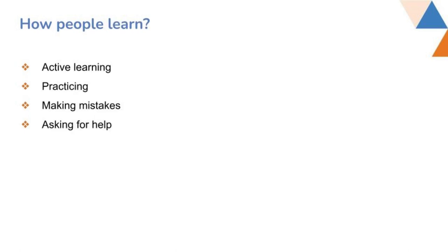The next thing is how people learn. Active learning happens when you are actively participating and you learn out of it — you do programming and then learn from it. Practicing by doing coding back and forth multiple times and learning new technologies helps you learn more effectively.